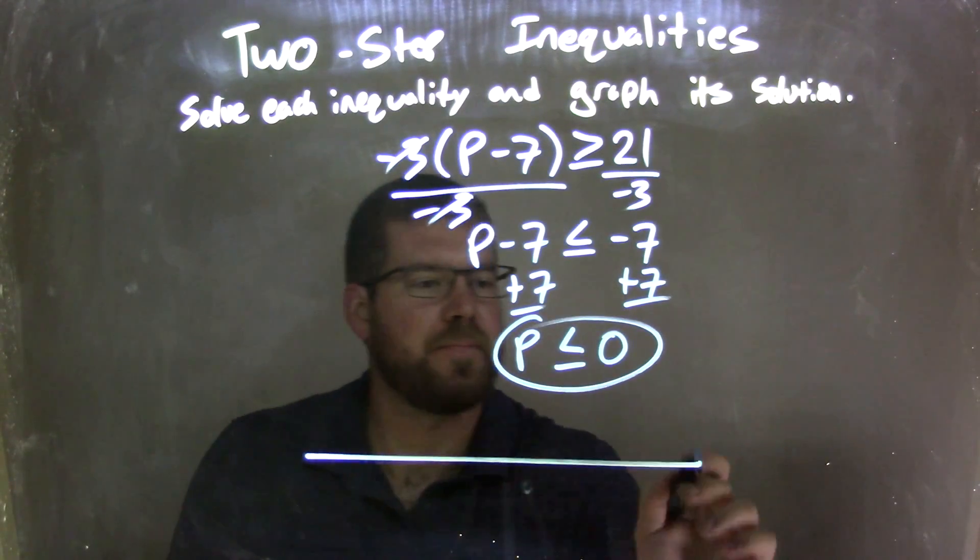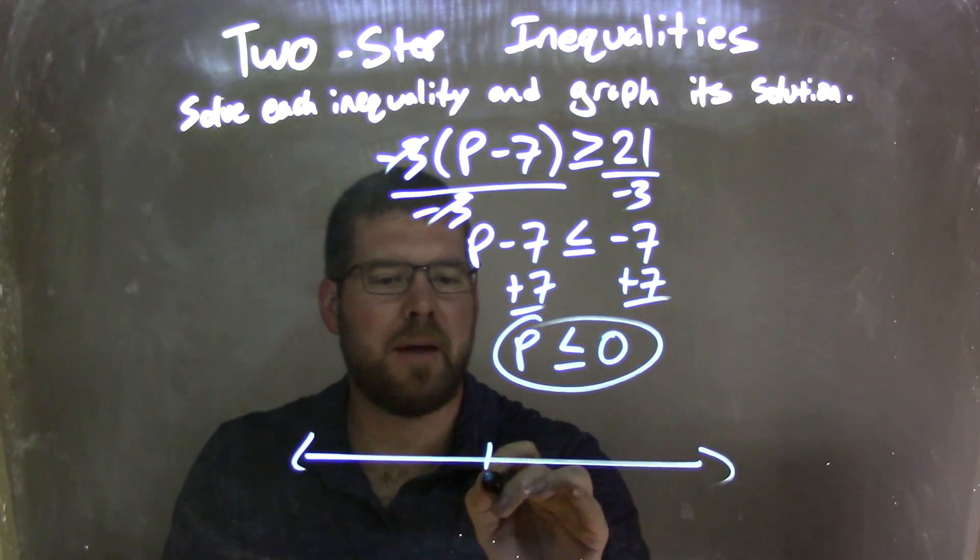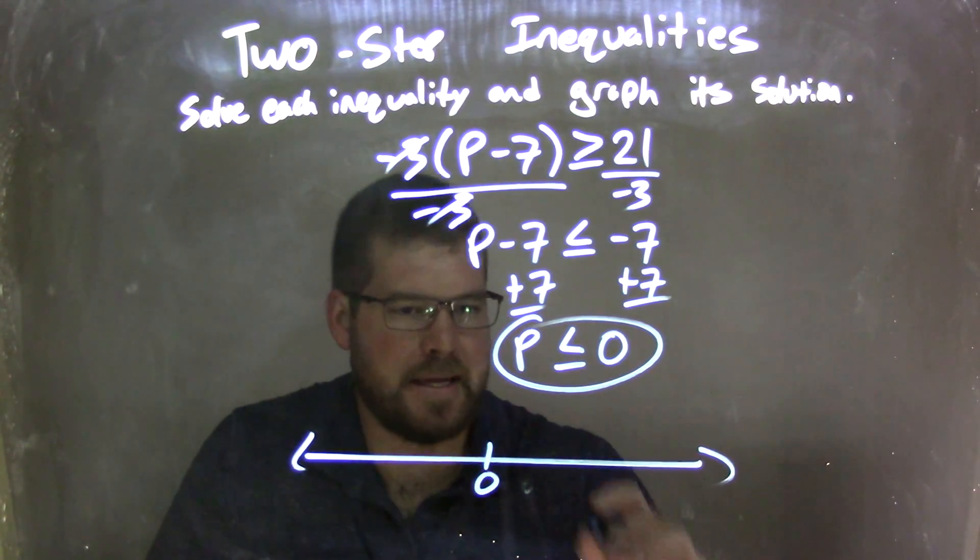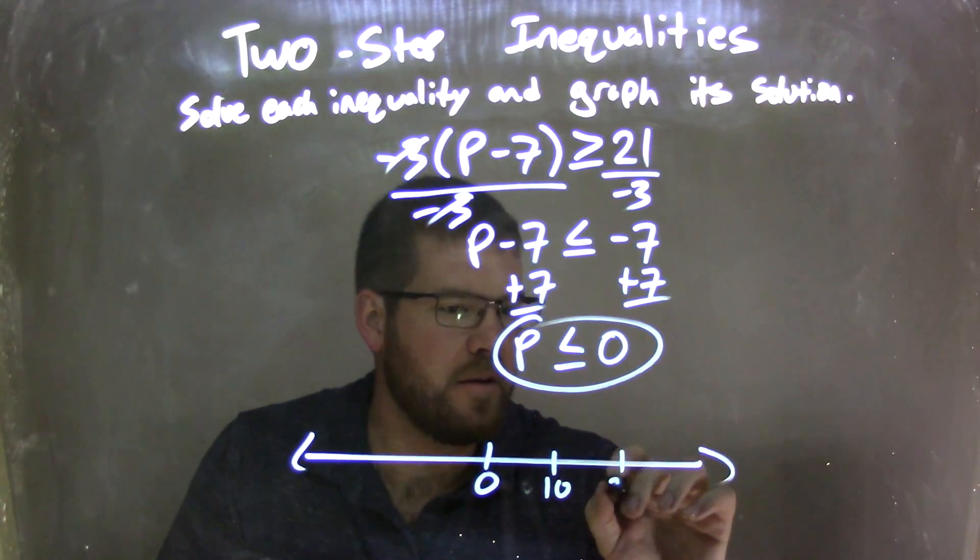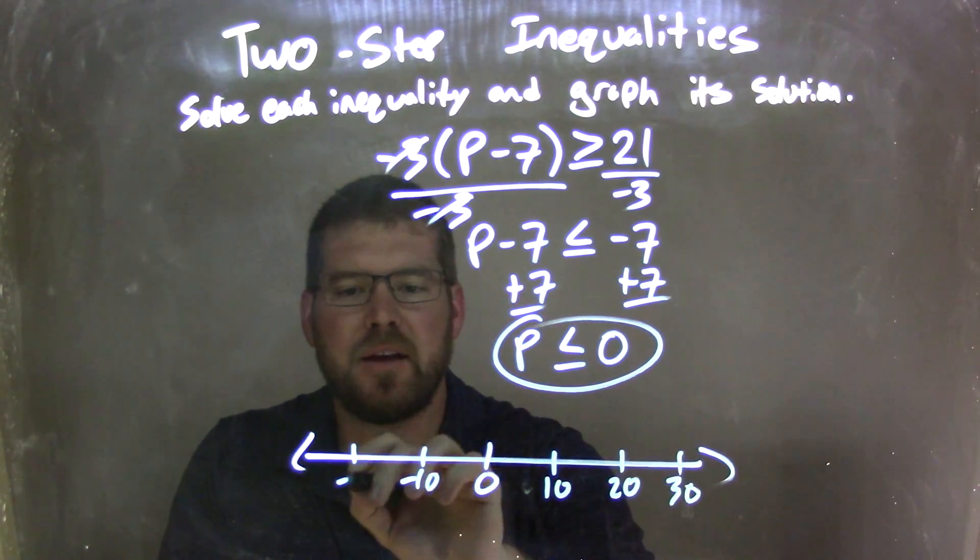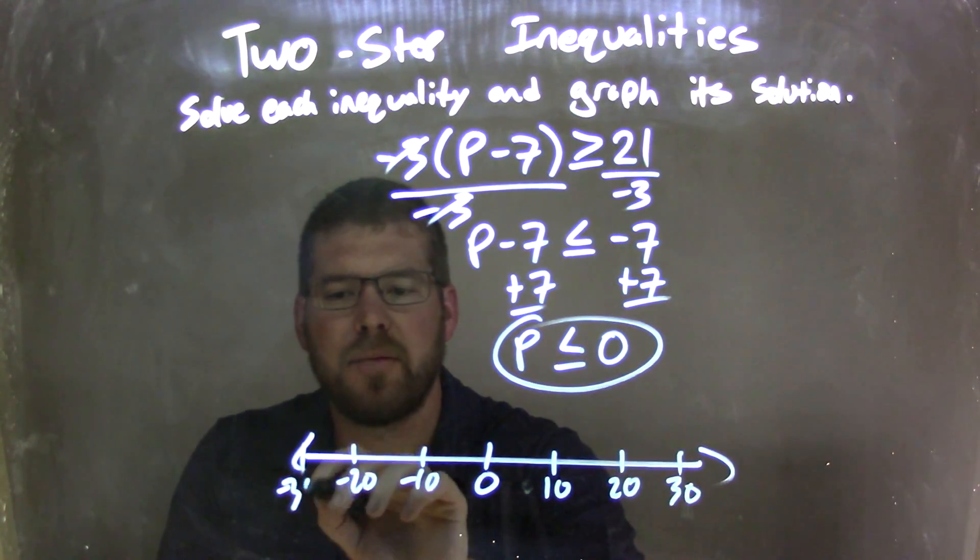So now I need a graphic. 0, slap that in the middle. You know what? Let's go crazy with this. Let's make our units by 10. 10, 20, 30, negative 10, negative 20, and negative 30.